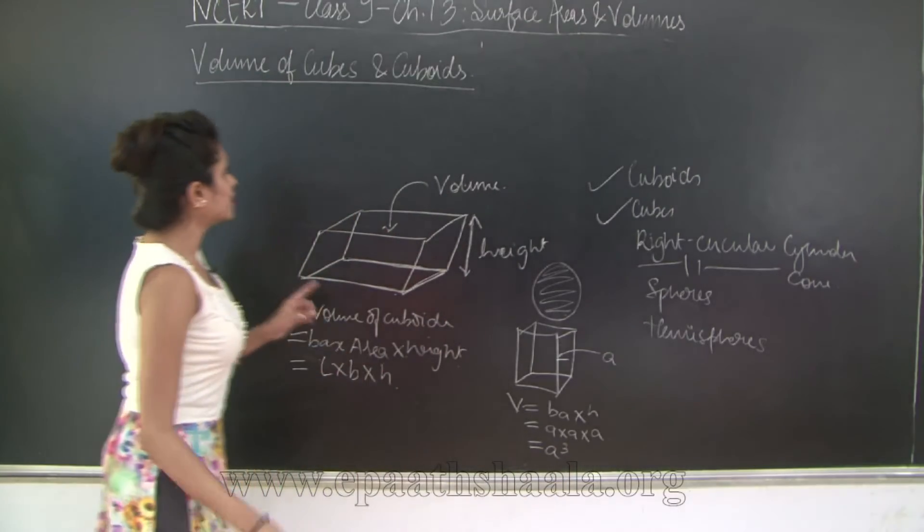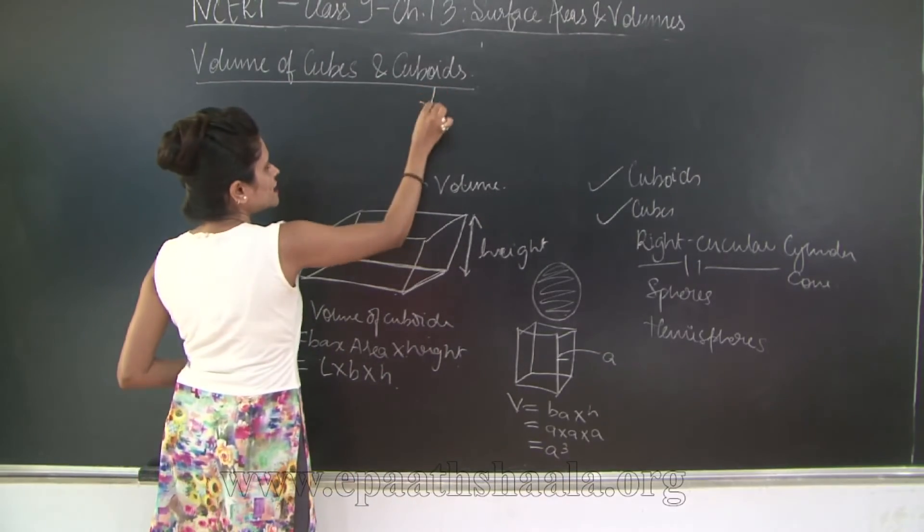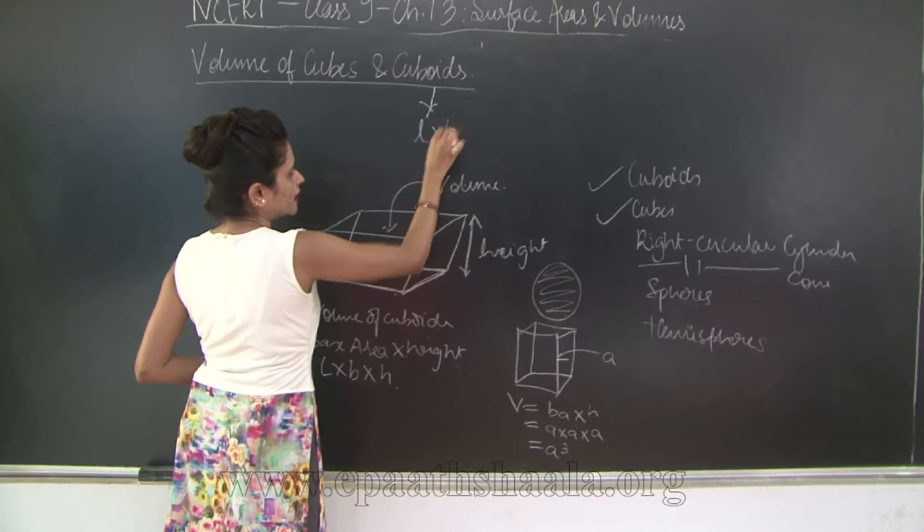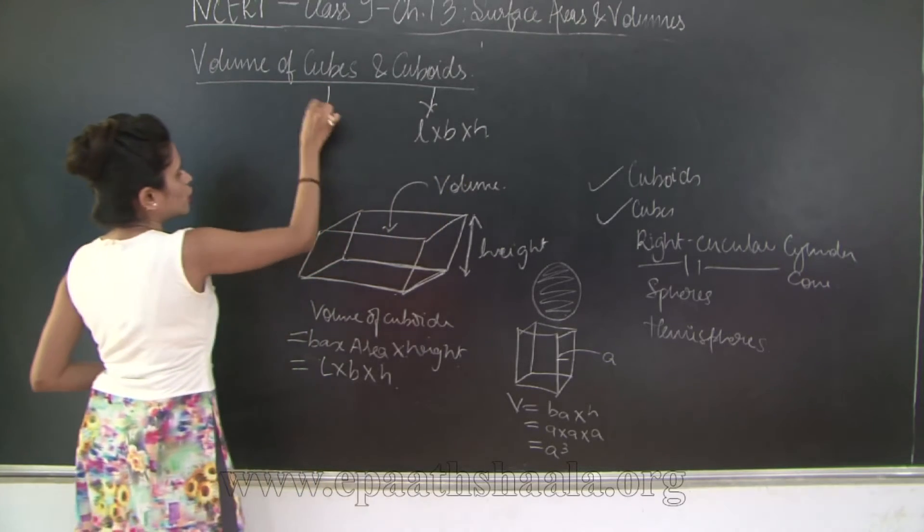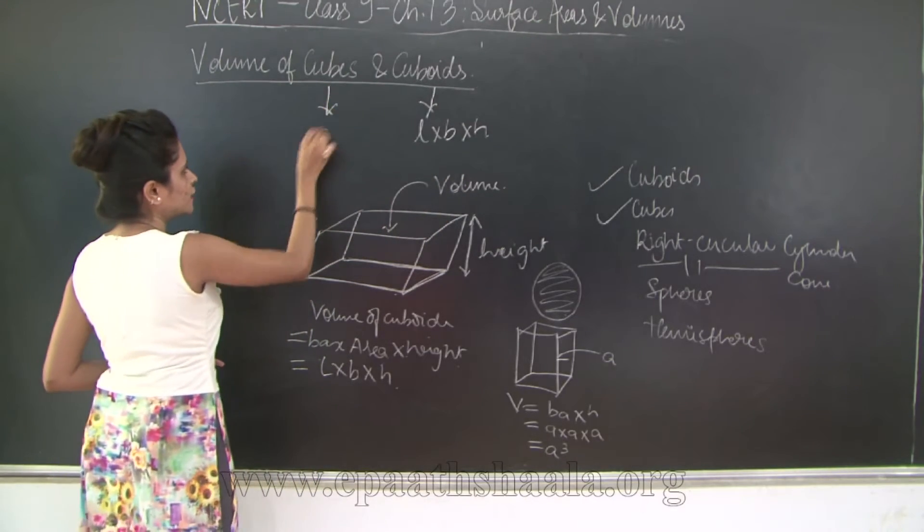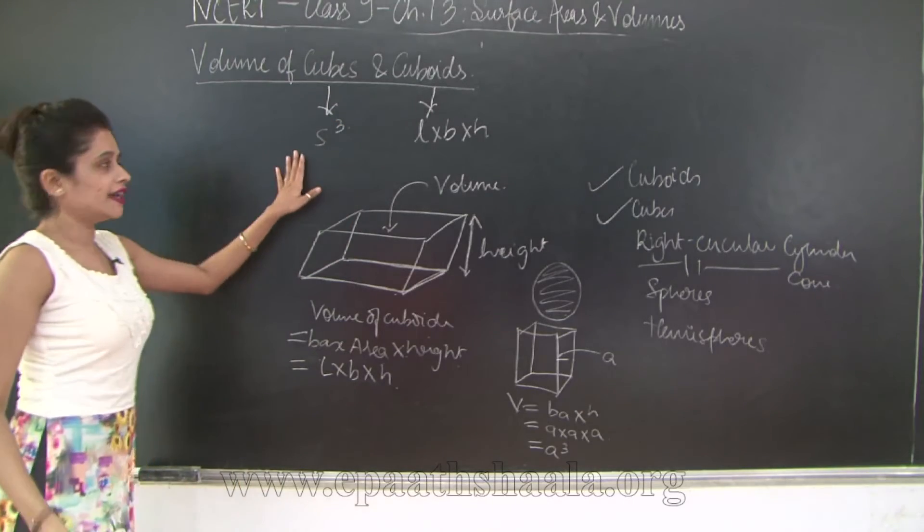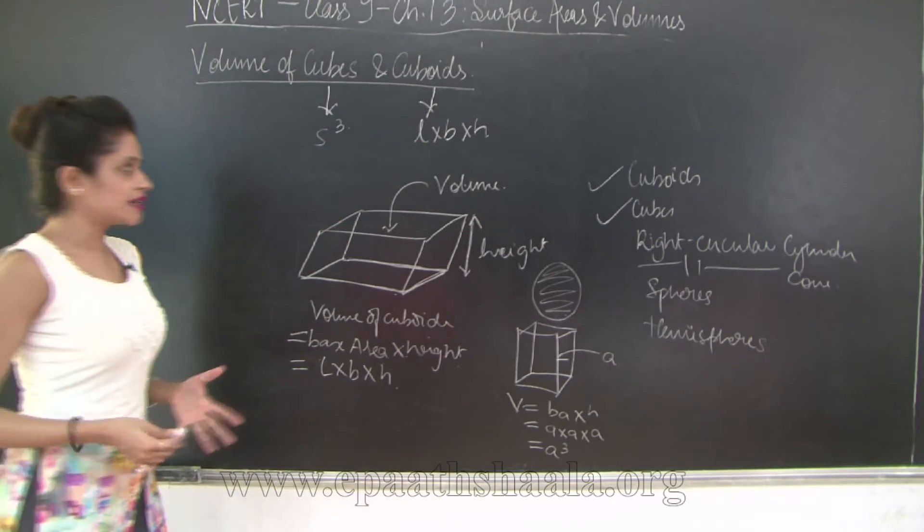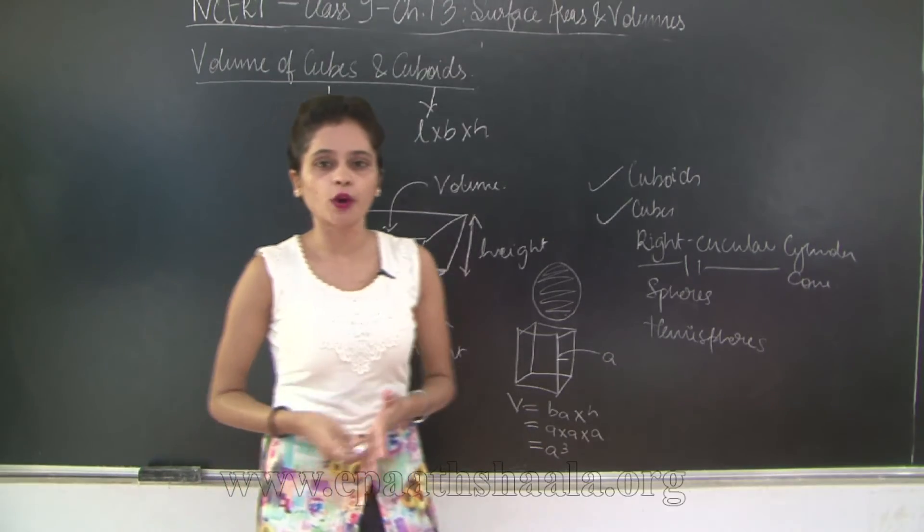So what do we finally get? That the volume of cuboid is length into breadth into height, whereas volume of cube is side cube, because here all the edges are equal in length. So this is a very short description of volumes of cubes and cuboids.